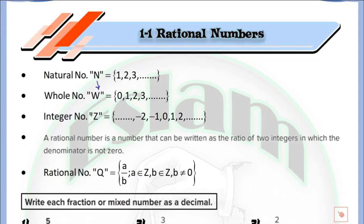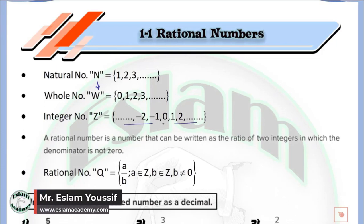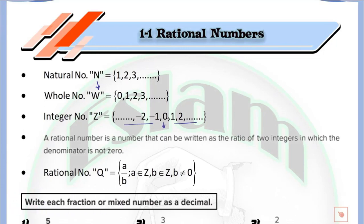After that we will form a new set defined by the integer numbers. We will use the letter Z for the integer numbers. The integer numbers are defined by three parts: the negative part, the positive part, and zero. Zero is neither positive nor negative. For positive we increase the amount and for negative we decrease the amount.